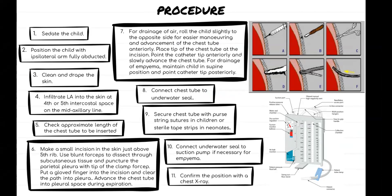Next, approximate the length of the chest tube to be inserted as it follows the curve of the chest. For pneumothorax, the tip of the chest tube should be seated at the highest point of the chest. For pleural effusion, it should be at the lowest dependent part of the chest.